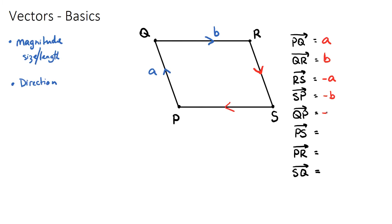Q to P is the same as vector a but in the opposite direction, so that's negative a. For P to S, that's the opposite of S to P. We already found S to P is negative b, so the opposite of negative b is just b. In fact, P to S is the exact same journey as Q to R.